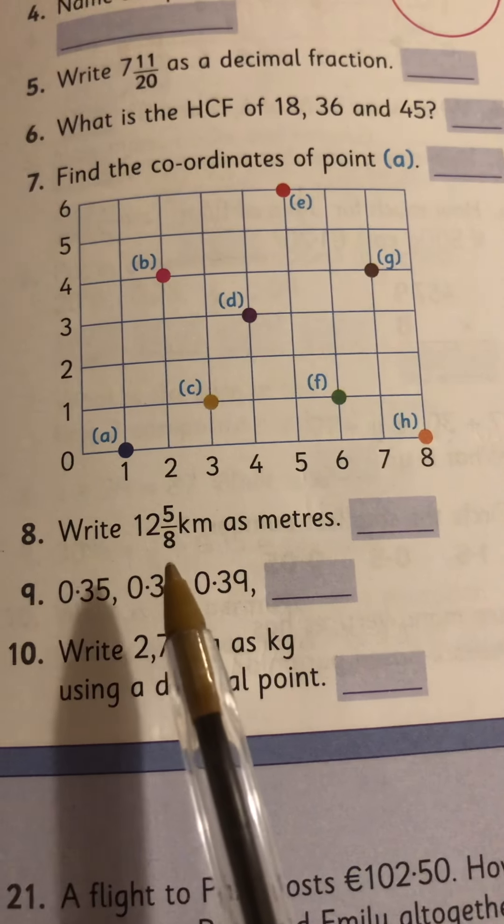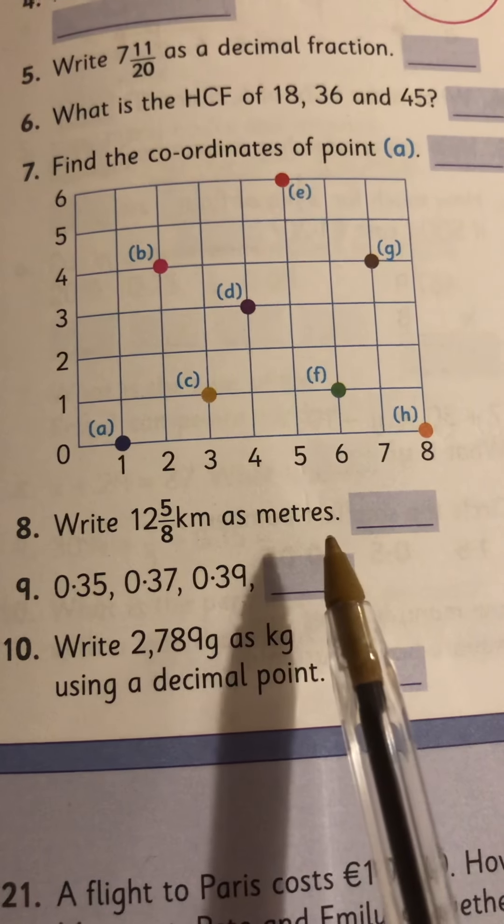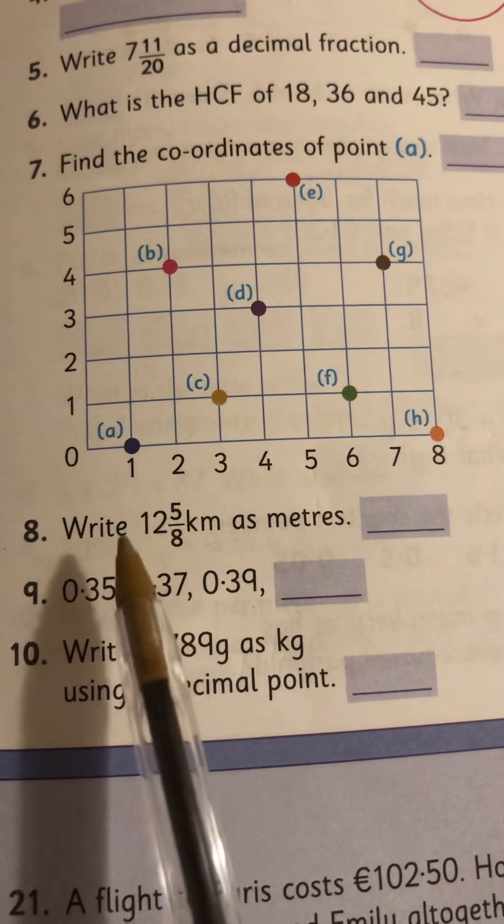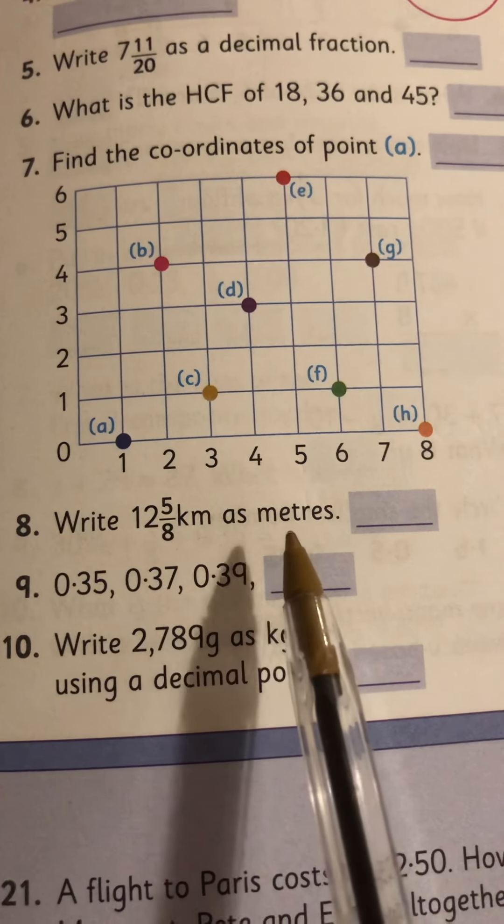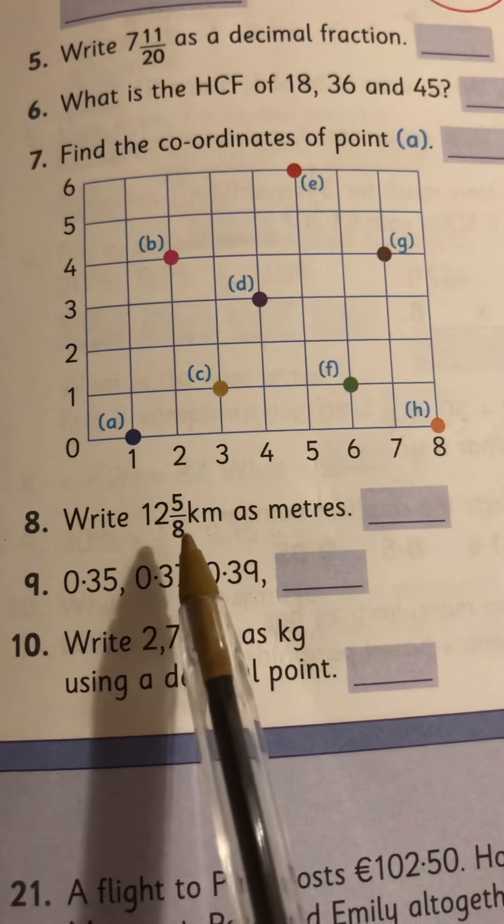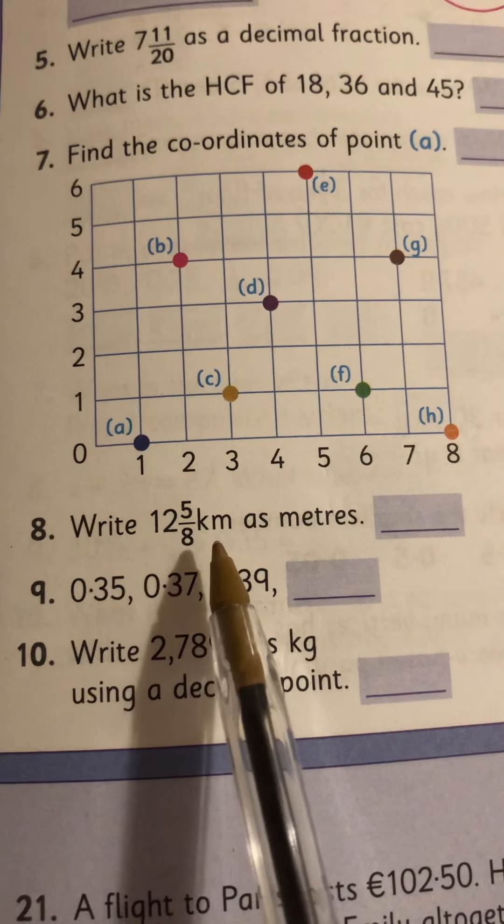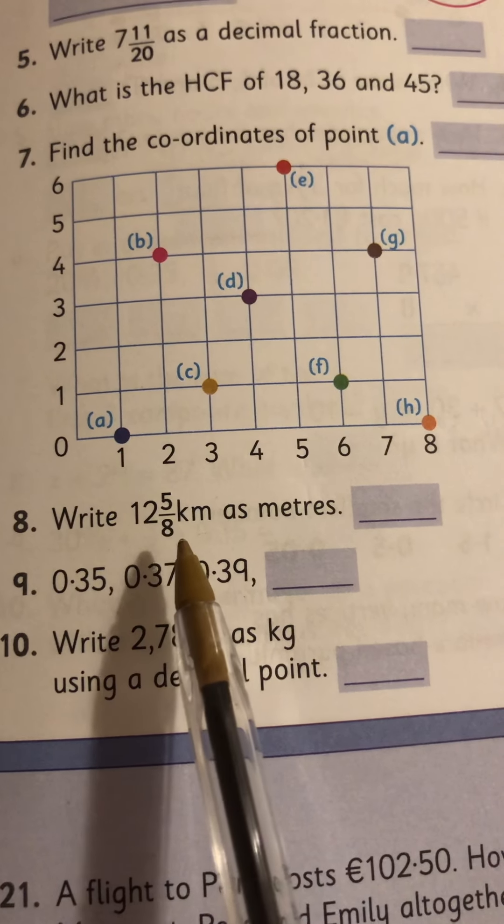Number 8, write 12 and 5 eighths of a kilometre as metres. So take the whole number first, 12 kilometres, what's that in metres, and then what's 5 eighths of a kilometre. So you're getting 5 eighths of a thousand.